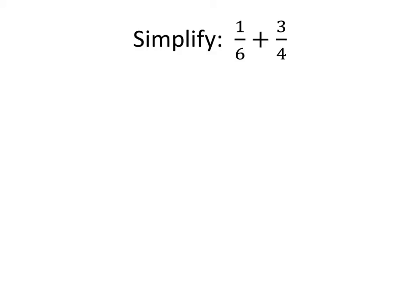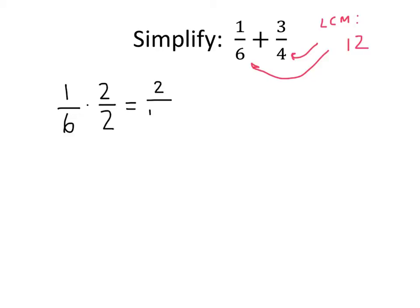So how do we get a common denominator? We need to find the least common multiple of 6 and 4. Any common multiple will do, but the least common multiple makes our job as easy as possible. The least common multiple of 6 and 4 turns out to be 12. 6 goes into 12 two times, and 4 goes into 12 three times. So to turn 1/6 into a fraction with a 12 on the bottom, we multiply top and bottom by 2. What we're really doing is multiplying by 1 in a fancy way, and what we get is an equivalent fraction: 2/12.